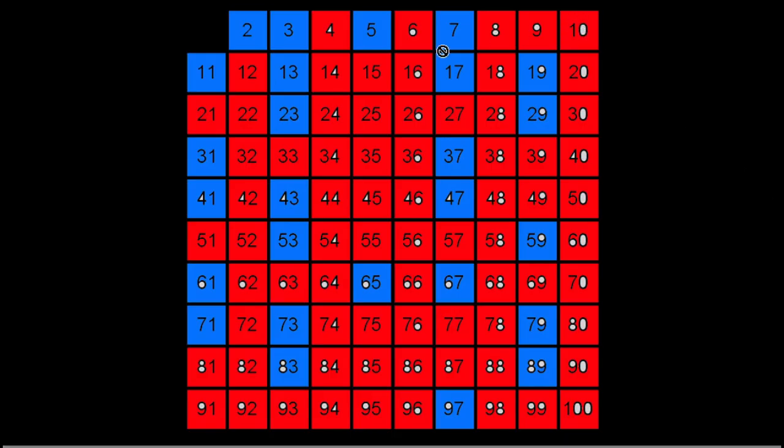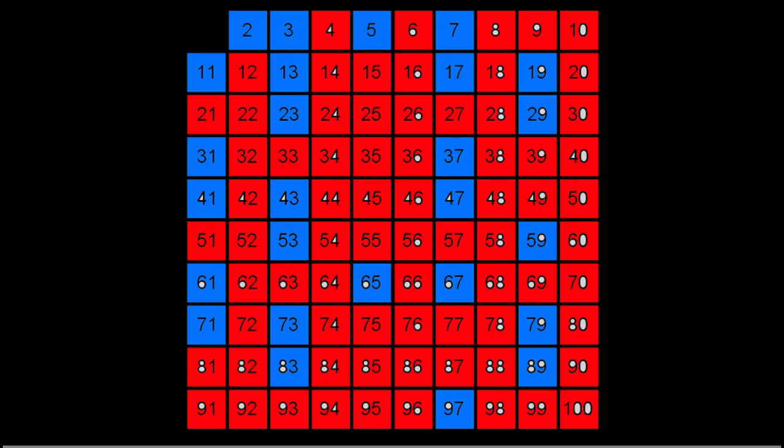We stopped when we hit 10, or if I showed it as 11, we actually stop because we have found all primes. So from 2 to the square root of n we proceed as follows: if a is unmarked then we know a is prime. And when we find a prime number, we mark all multiples of a off as composite. And that's it. So you find a number prime, mark off the multiples, go back to the beginning, increment a by 1.